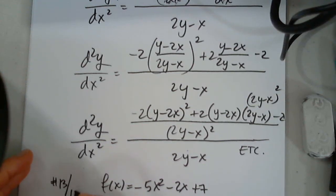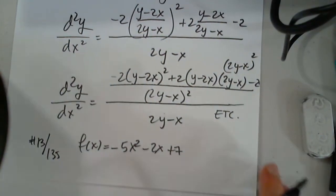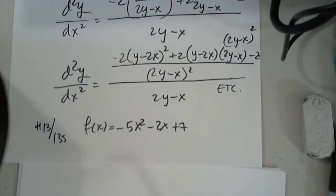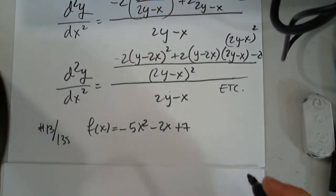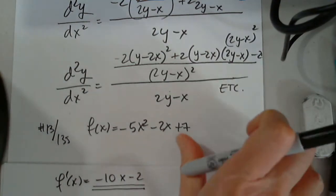13 on 135. Great job. So what I would do here, if I get a problem like this, I will find a derivative using differentiation rules on my test paper, on the side, negative 10x minus 2. So I know what to expect from the very beginning.